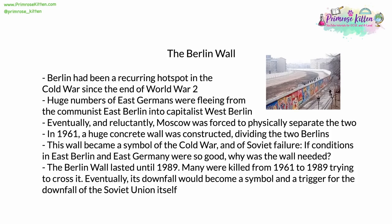Germany, and Berlin in particular, had been a particularly troublesome issue throughout the Cold War. Huge numbers of East Germans were fleeing from communist East Berlin into capitalist West Berlin, with its glittering lights, stocked shelves, and higher living standards. Eventually and reluctantly, Moscow was forced to physically divide the two. In 1961, barbed wire quickly followed by a huge concrete wall was constructed — this was the Berlin Wall. It divided the two halves of Berlin and quickly became a symbol of the Cold War: a symbol of Soviet failure to stop their citizens fleeing and to keep up with Western living standards. If conditions in East Berlin and East Germany were so good, why was the wall needed? The Berlin Wall lasted until 1989. A huge number of people were killed trying to cross it, as there was a kill zone on the Soviet side where anyone trying to cross was shot. Eventually its downfall would become both a symbol of and a trigger for the downfall of the Soviet Union itself.